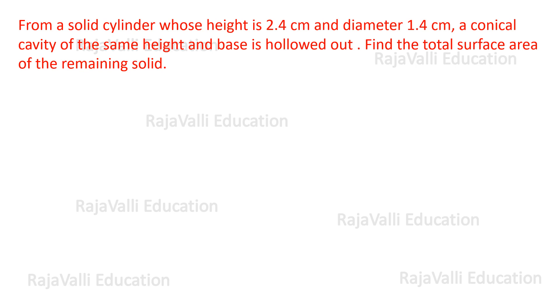from a solid cylinder whose height is 2.4 cm and diameter 1.4 cm, a conical cavity of the same height and base is hollowed out. Find the total surface area of the remaining solid.